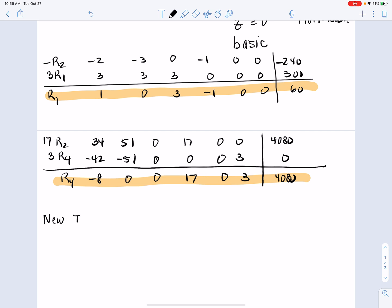And for our new table, remember, I am going to write down the column headings because they're just too much to keep track of elsewhere. And then we have our right-hand side. So the new r1 is 1, 0, 3, negative 1, 0, 0, 60.